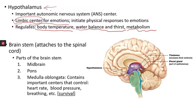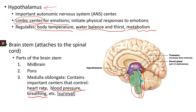The brainstem attaches to the spinal cord. The most important part of the brainstem is the medulla oblongata — that's the last part before you reach the spinal cord. The medulla oblongata contains important neurons that control your heart rate, blood pressure, breathing, swallowing, and vomiting response. These functions are related to your survival, so the medulla oblongata is very important. If the brainstem is damaged, your life can be in danger.